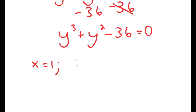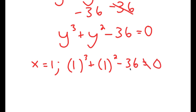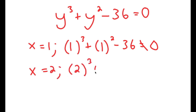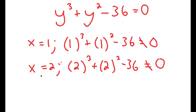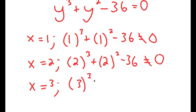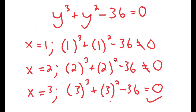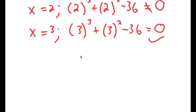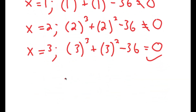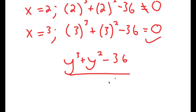Plugging in y equals 1 gives 1 cubed plus 1 squared minus 36, which equals 2 minus 36, which does not equal 0. For y equals 2, I get 2 cubed plus 2 squared minus 36, which is 8 plus 4 minus 36, which also does not equal 0. For y equals 3, I get 3 cubed plus 3 squared minus 36: 27 plus 9 is 36, and 36 minus 36 equals 0. So y equals 3 is a solution. Now I need to divide y cubed plus y squared minus 36 by y minus 3.